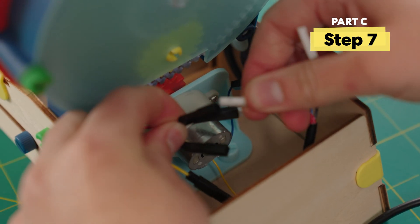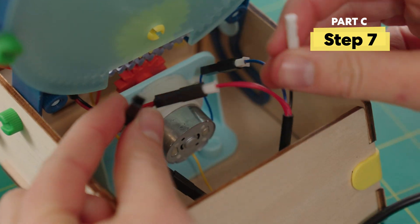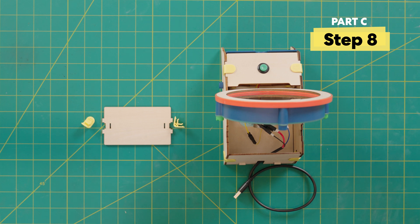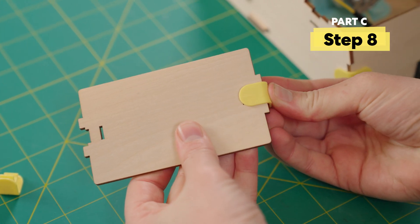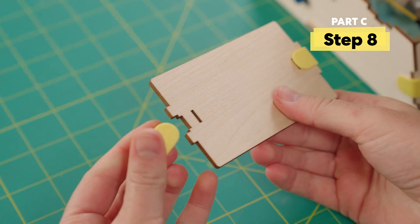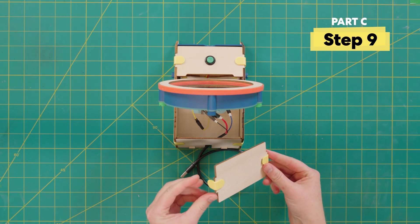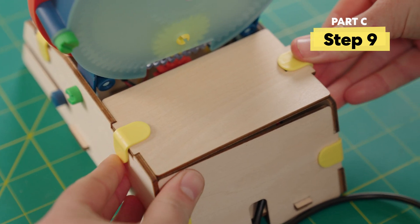First, red to red. And now, black to black. Next, let's add these clips onto the wooden piece. One side. And the other. Let's add the piece onto the back. You should hear click on this side and over here. Now, let's turn the mirror around.